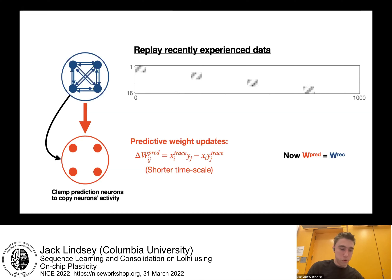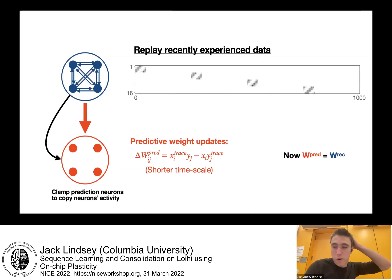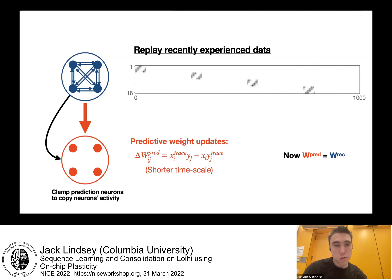If we clamp activity in a separate network — the red network — to match that of the blue, and also apply an STDP learning rule at the synapses connecting the two populations, then after enough iterations the blue-to-red network weights will encode the same information as the original recurrent weights in the blue network.